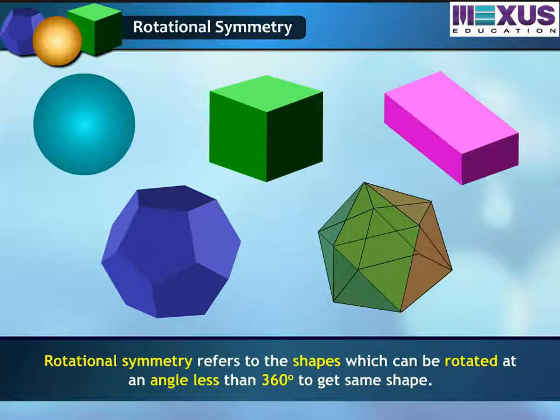Rotational symmetry refers to the shapes which can be rotated at an angle less than 360 degrees to get the same shape.